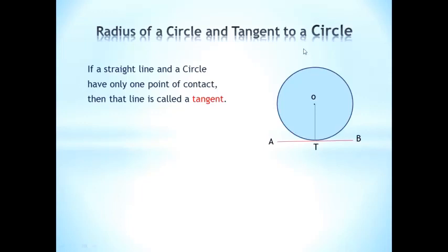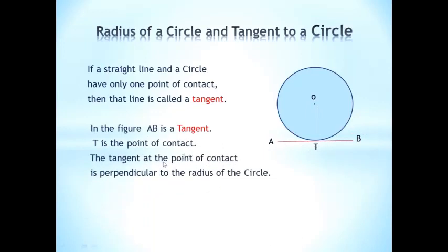A radius of the circle. If a straight line and a circle have only one point of contact, then that line is called a tangent. You can see AB is touching at one point to the circle. The point of contact is perpendicular to the radius of the circle.